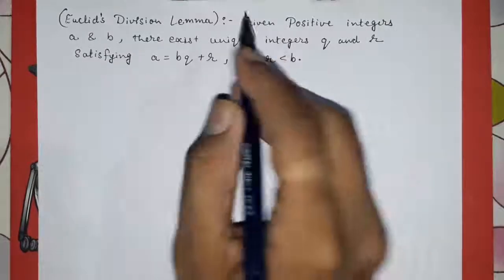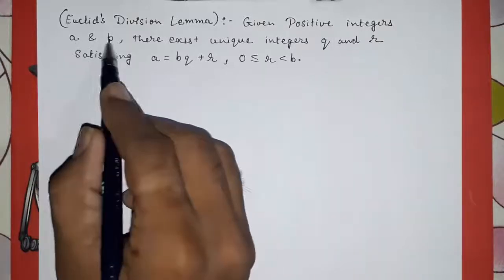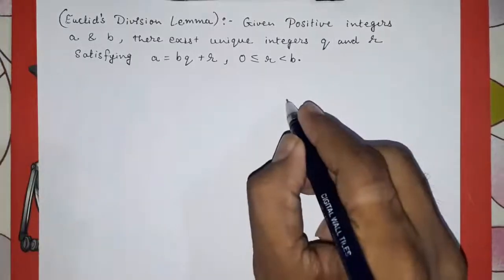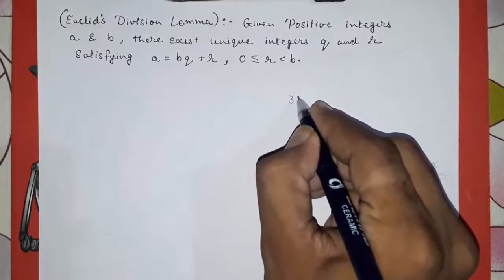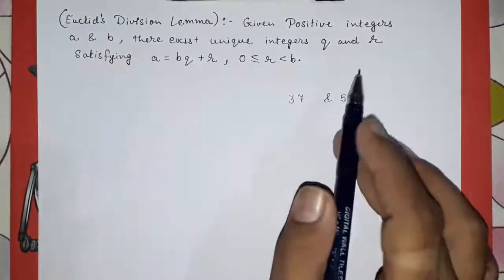You will not understand anything from this directly, so first, given positive integers a and b, there are two positive integers. I am writing it here, suppose 37 and 5, two positive integers are given to you.